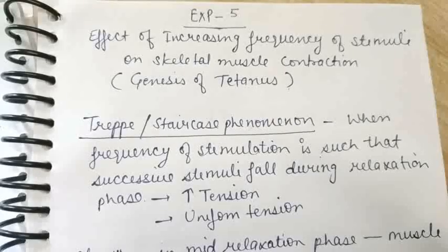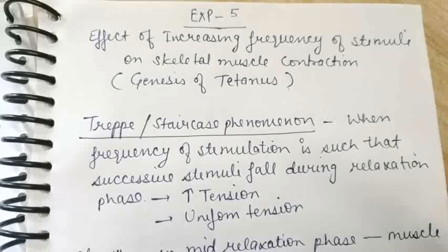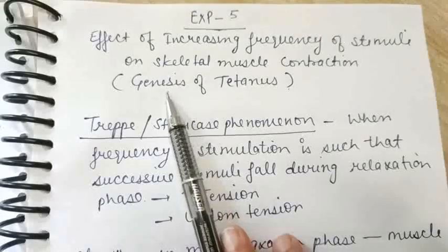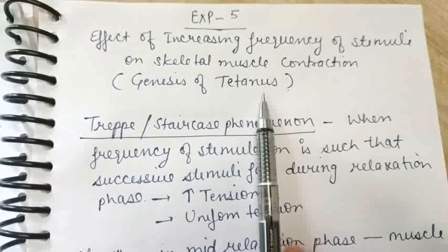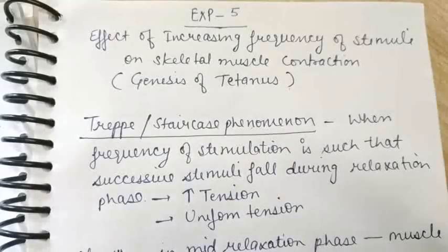Hi everyone, welcome to my channel. In this video we'll be talking about the next experiment of amphibian physiology, that is the effect of increasing frequency of stimulation. Here we'll be giving many stimulations, and since we are giving many stimulus we'll call it stimuli, on skeletal muscle contraction. You can also find a name for this experiment: genesis of tetanus.